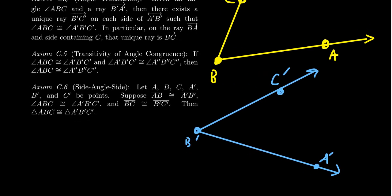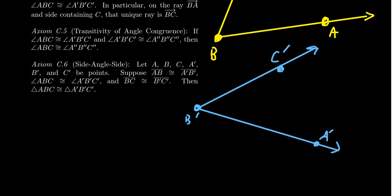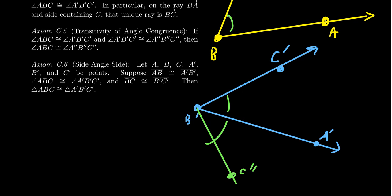Unlike segment translation, angle translation actually guarantees the angle can be translated in two different places. Because when you have ray B'A', that ray can be extended to a line, and we know from order geometry there are two sides of the line. So when it comes to angle translation, we can translate onto either side of the line. We get angle A'B'C' on one side or angle A'B'C'' on the other — both will be congruent to the original angle ABC. So you must pick which side of the line you're working on, and on each side there will be a unique ray giving you a congruent angle. When you copy it back onto itself, you get equality.